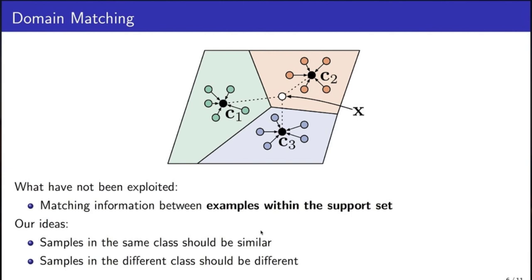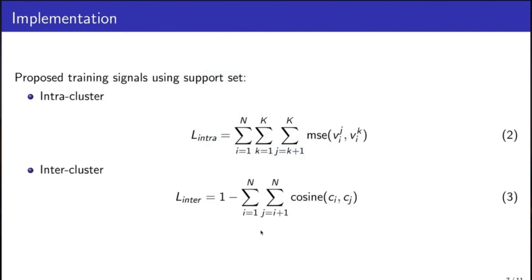So we propose two training signals, namely intra-cluster and inter-cluster matching. The intra-cluster matching minimizes the distance among representation vectors of instances in the same class. Whereas the inter-cluster maximizes the distance among prototypes of the cluster using negative cosine similarity.